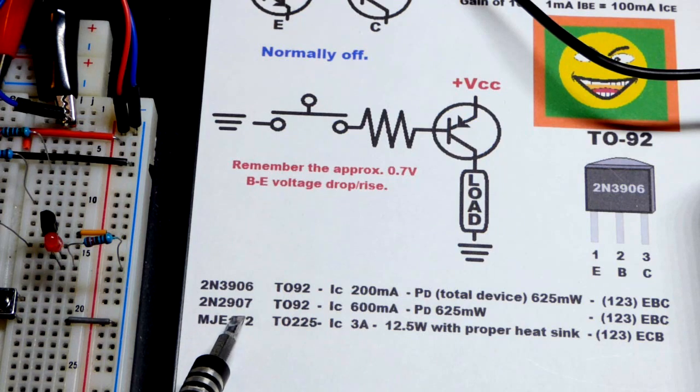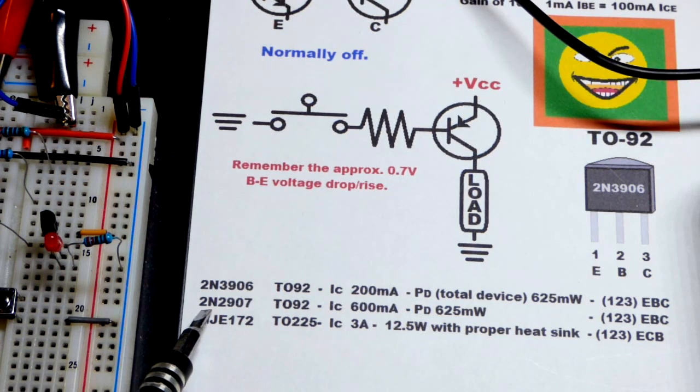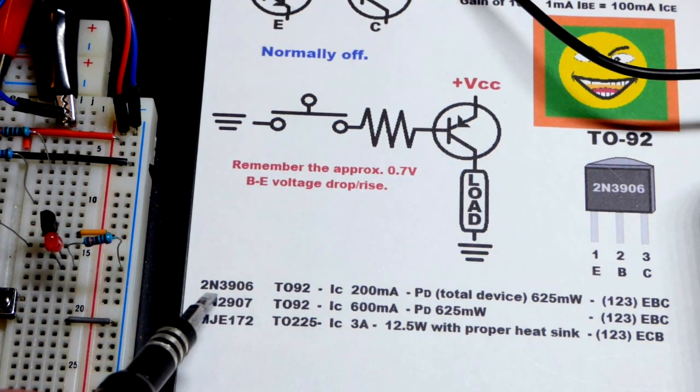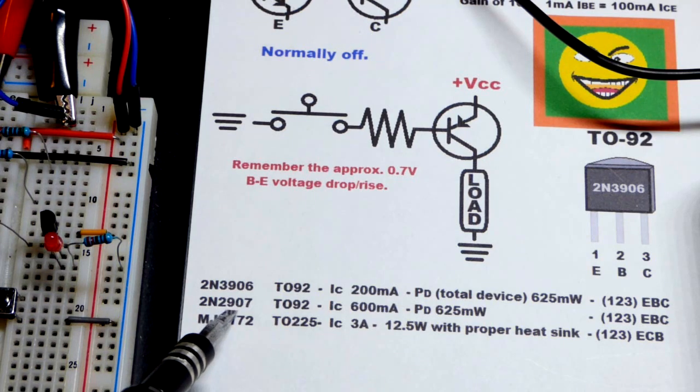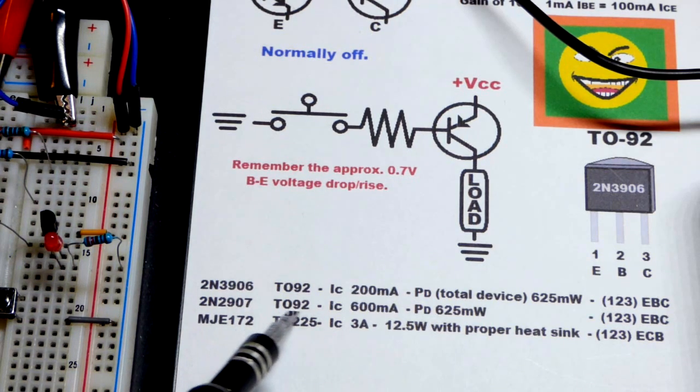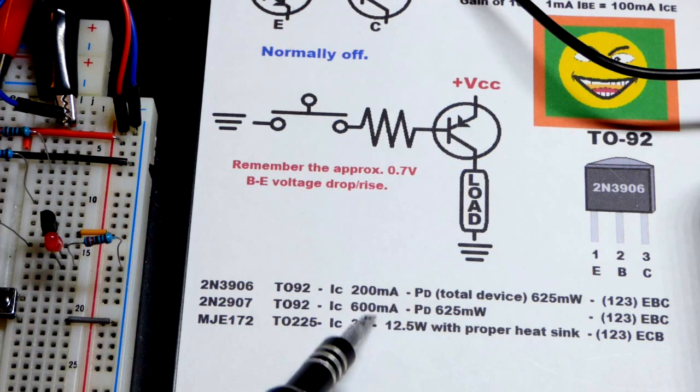The 2N2907, in the last video we looked at the 2N2222. There really is no exact PNP version of the 2N2222, but this is close. It has about the same properties. As you can see here, it can also handle a collector current of 600 milliamps. Of course, it's going in the opposite direction of the 2N2222.